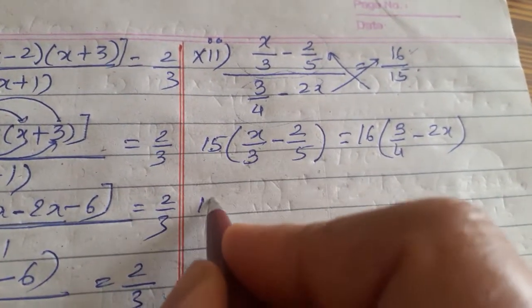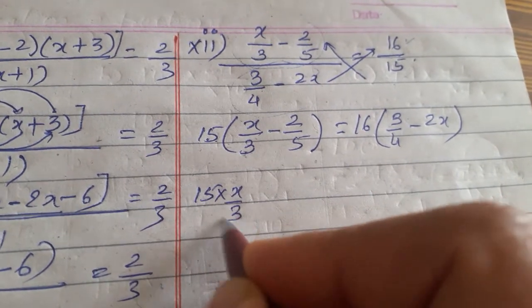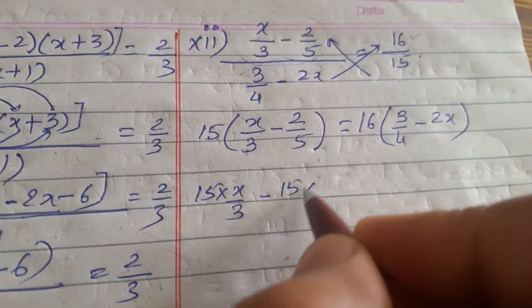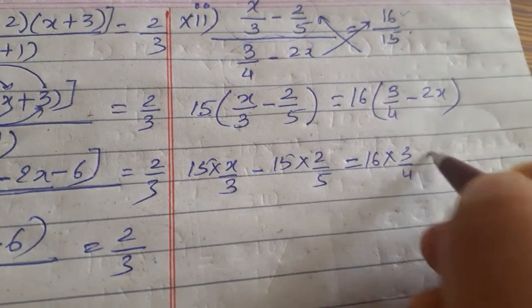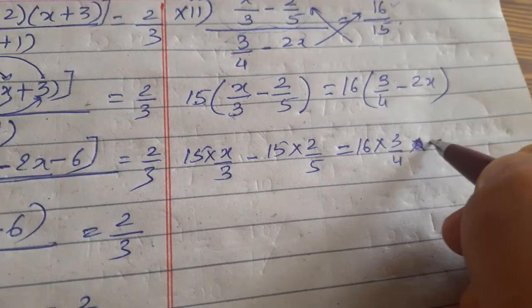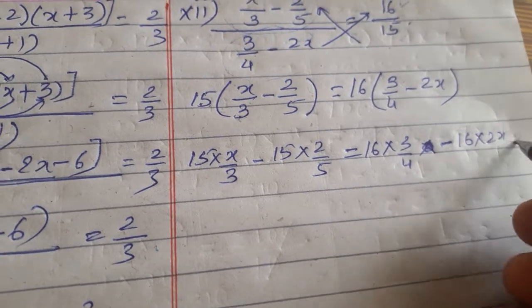15 into x by 3. Bracket ko simple steps me kalli tinko 15 into 2 by 5 is equal to 16 into 3 by 4 minus 16 into 2x.